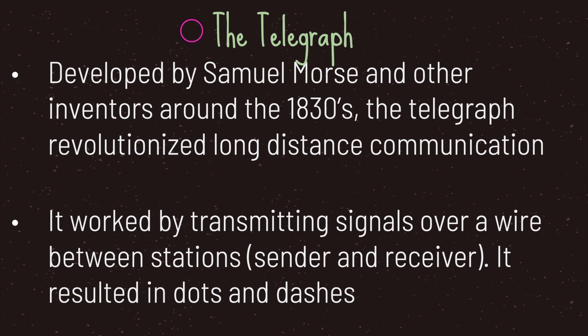Even though the machine was quite complex in its nature, the way it communicated between two different parties was quite simple. It worked by transmitting signals over a wire between stations — a station to send the message and another station to receive the message.